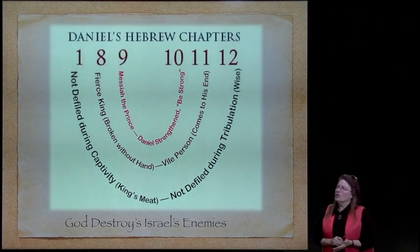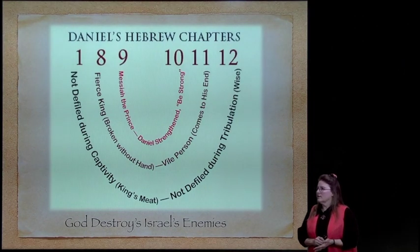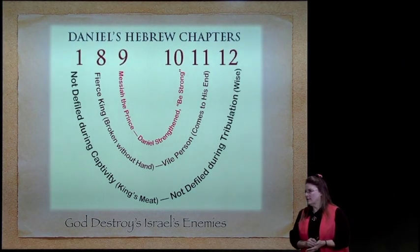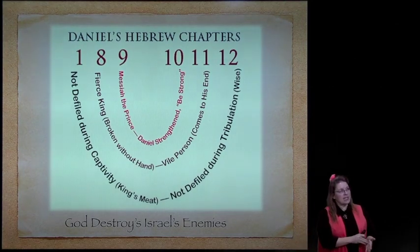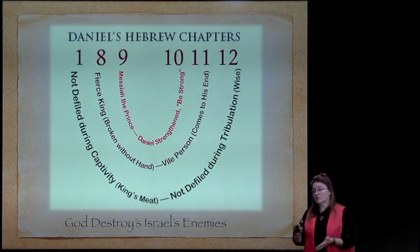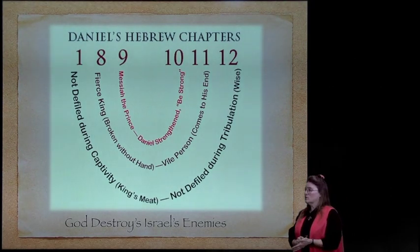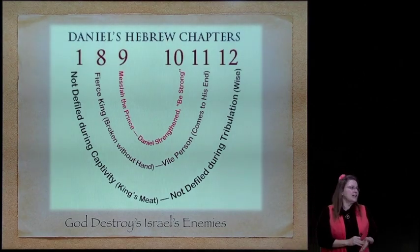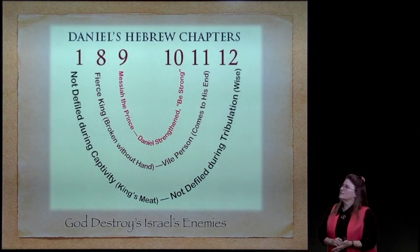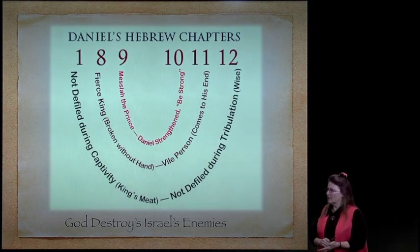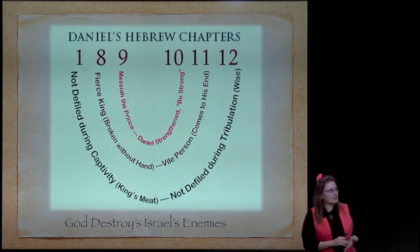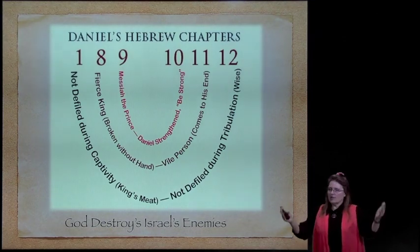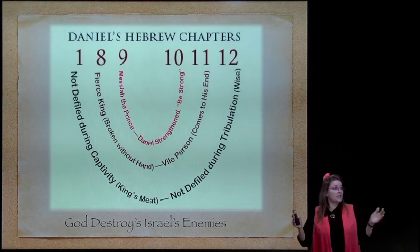And in Daniel 12, where they're not defiled—no matter if it's to the death, they will stand and be wise and their robes will be made white during the tribulation, and they're not defiled. That's kind of the framework at the beginning and the end. The two chapters in the center of the Hebrew chapters show that Messiah, the prince, comes and strengthens Daniel and tells him during the tribulation, 'Be strong.'